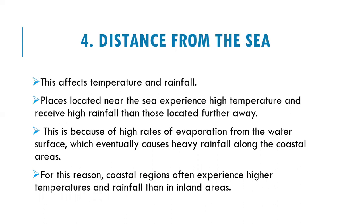The fourth factor is distance from the sea. This affects the temperature and rainfall — places located near the sea experience higher temperatures and receive higher rainfall than those located far away. This is because of high rates of evaporation from the water surface, which eventually causes heavy rainfall along coastal areas.